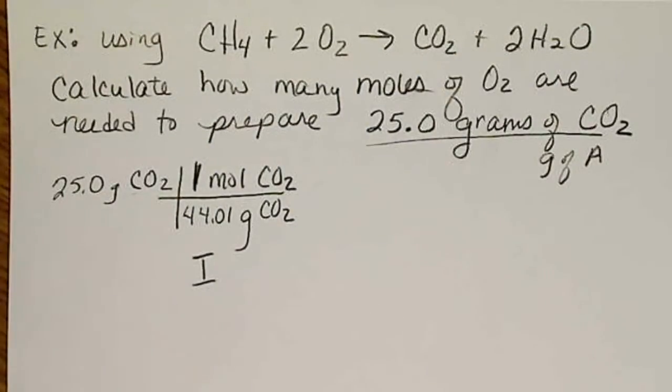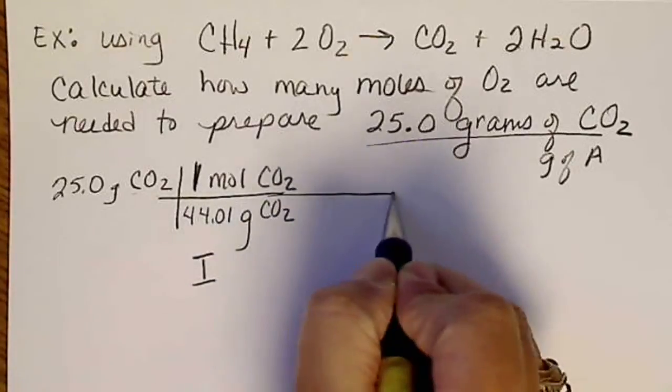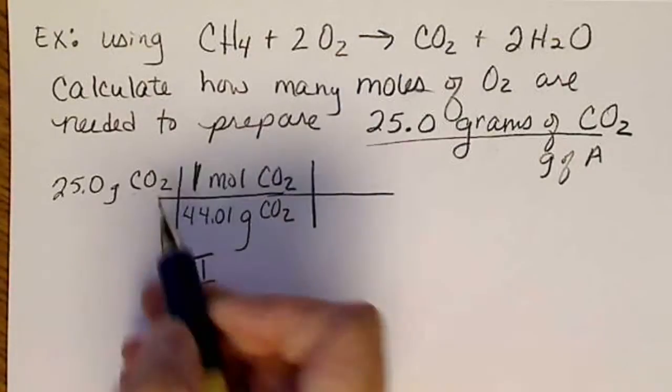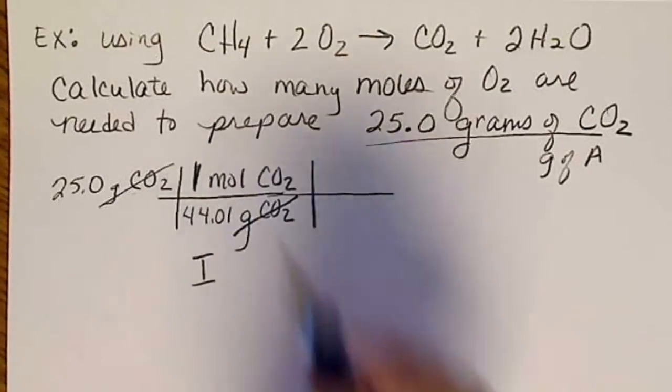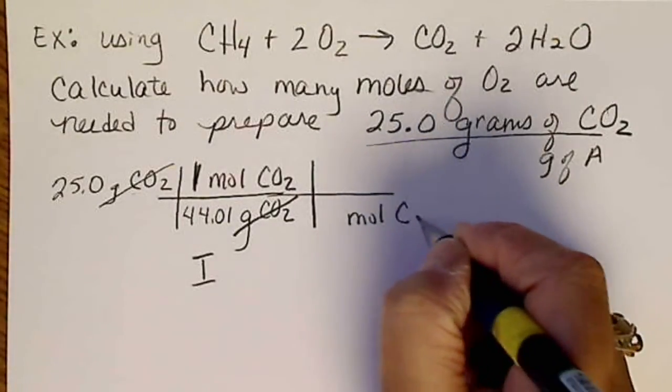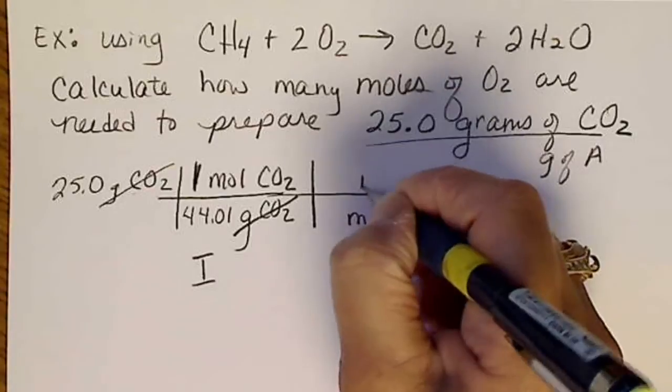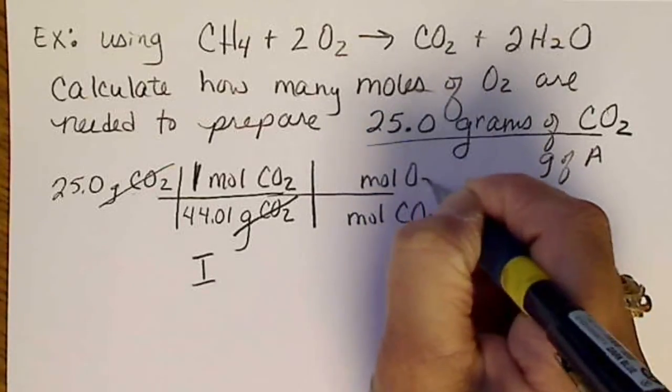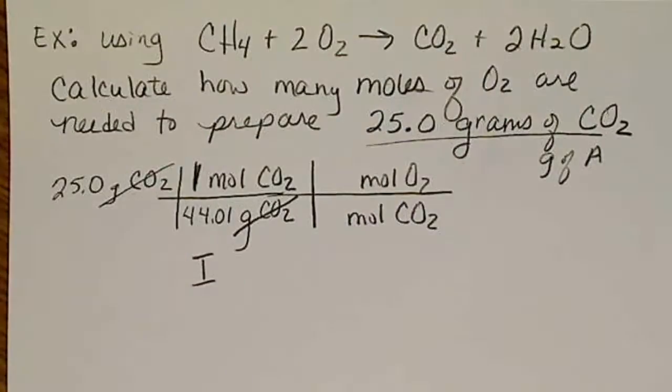If we're given grams, we have to go to moles. Then we're going to go to the balanced equation step because grams of CO2 cancels grams. Now we have moles of CO2. And we're going to go to moles of O2 because that was the other formula in the question.